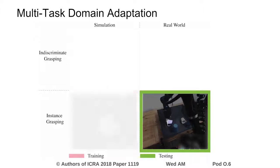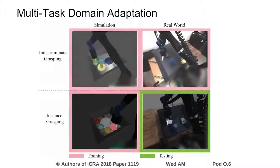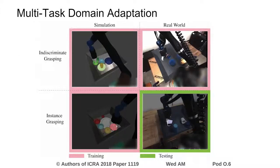we propose to only use simulation to collect labeled data for instance grasping. To resolve the domain shift between simulation and the real world, we utilize indiscriminate grasping data, which is available in both simulation and the real world.